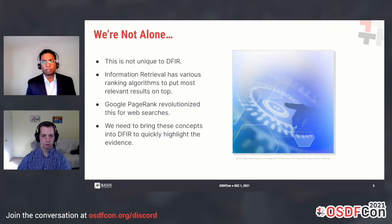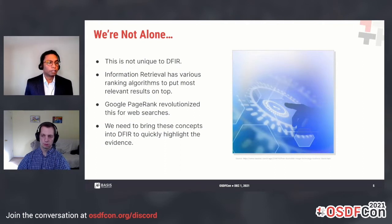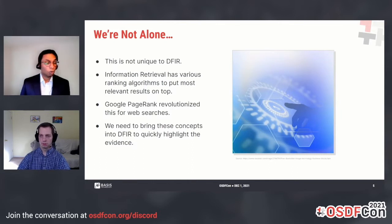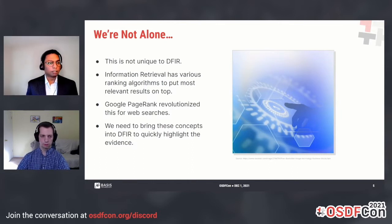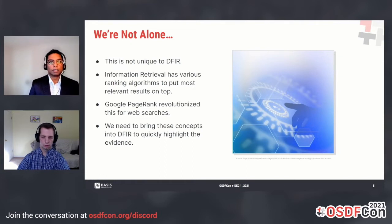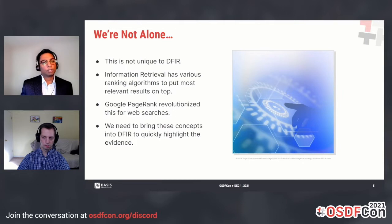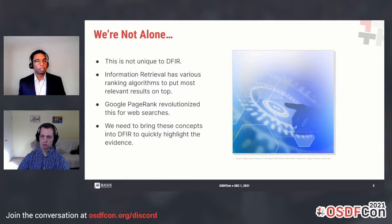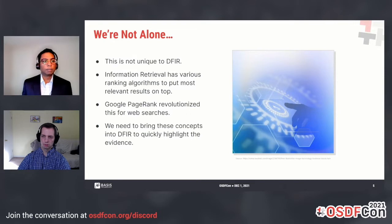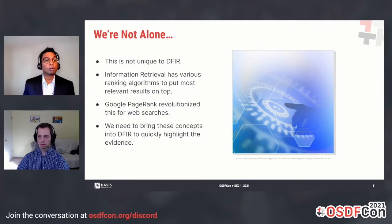We are not alone in this. The problem of large amounts of data is pretty common. Google solved this problem a long time ago by scoring or ranking the pages they think are most relevant to your search. Our approach is similar — we have heuristics that the user can opt into and download, and hopefully, together with the system and the user, we can narrow down the search space and come to conclusions quickly.